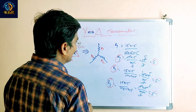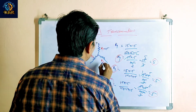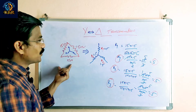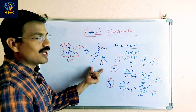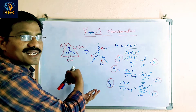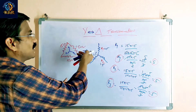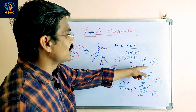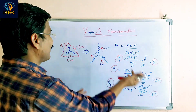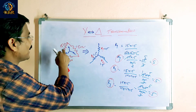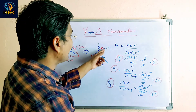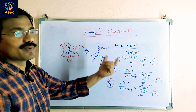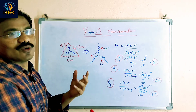R1 is 5, R2 is 5, R3 is 5. Delta has given, we can transform it into star and calculate the values. Previously star was given with 5, 5, 5 — we converted it into delta and got 15, 15, 15. Delta is given as 15, 15, 15 — we convert it into star and get 5, 5, 5 values. This is the way of transformation: star to delta, and vice versa, delta to star.